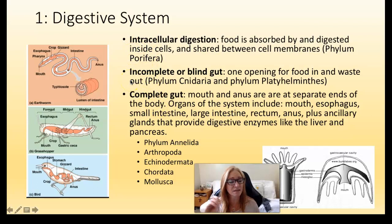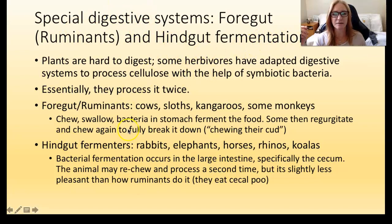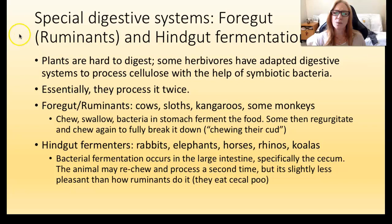Some of the phyla that have a complete gut include annelids (worms), arthropods, echinoderms, chordates (all vertebrates), and mollusks. In between the two openings there are a bunch of ancillary organs and sections depending on the type of animal. There are some special ways digestion is done in some animals, especially vertebrates. Animals that only eat plants have a hard time breaking down and digesting plant matter completely.